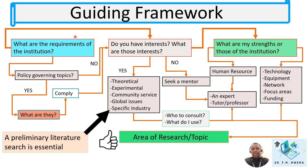These aspects are actionable steps to help you identify a research topic or area. Step one is understanding the requirements of the graduate school and institution you are enrolled in or planning to enroll in. Step two is understanding your interests. Step three is identifying your personal strengths as well as the strengths of the institution.